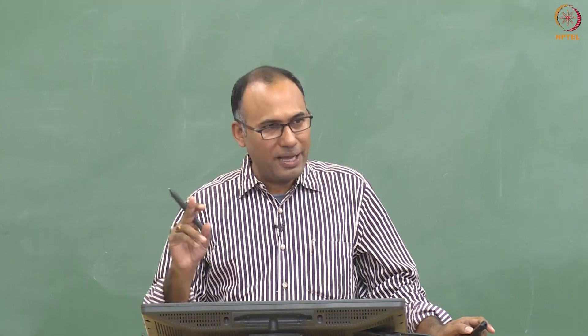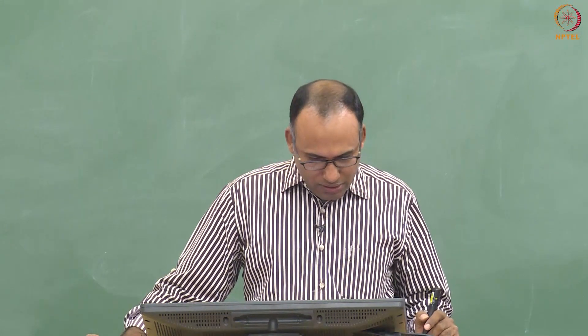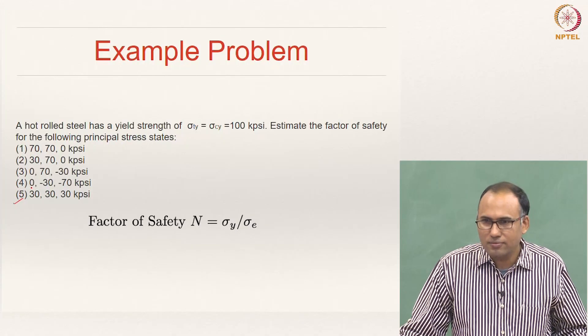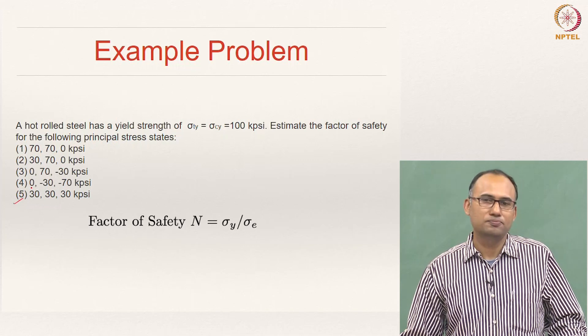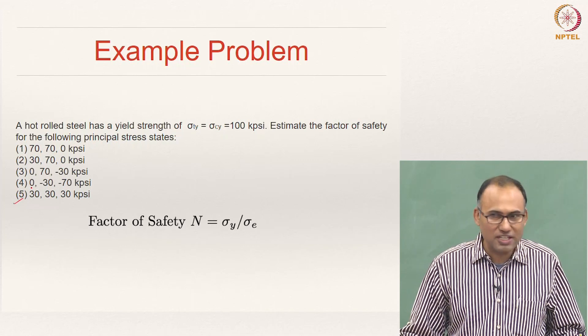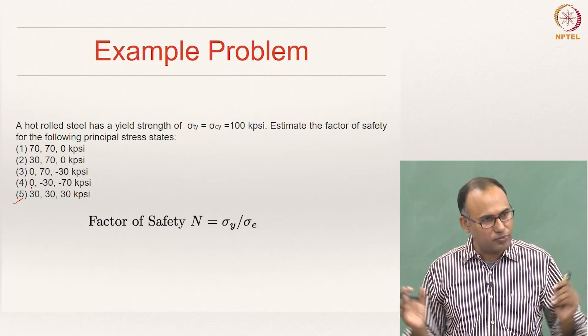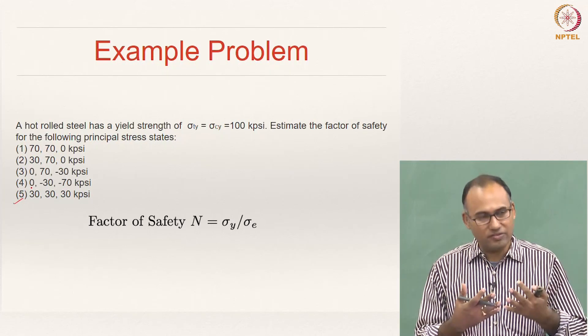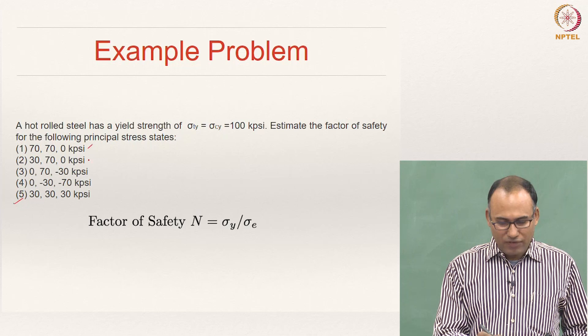We have looked at maximum shear stress theory and distortion energy theory in the last class. Now let us look at the calculation of factors of safety for different stress states. What will be the factor of safety for a hydrostatic state of stress? The equivalent stress should be 0, which means you have an infinite factor of safety — it will never yield. Hence, your factor of safety is infinity.